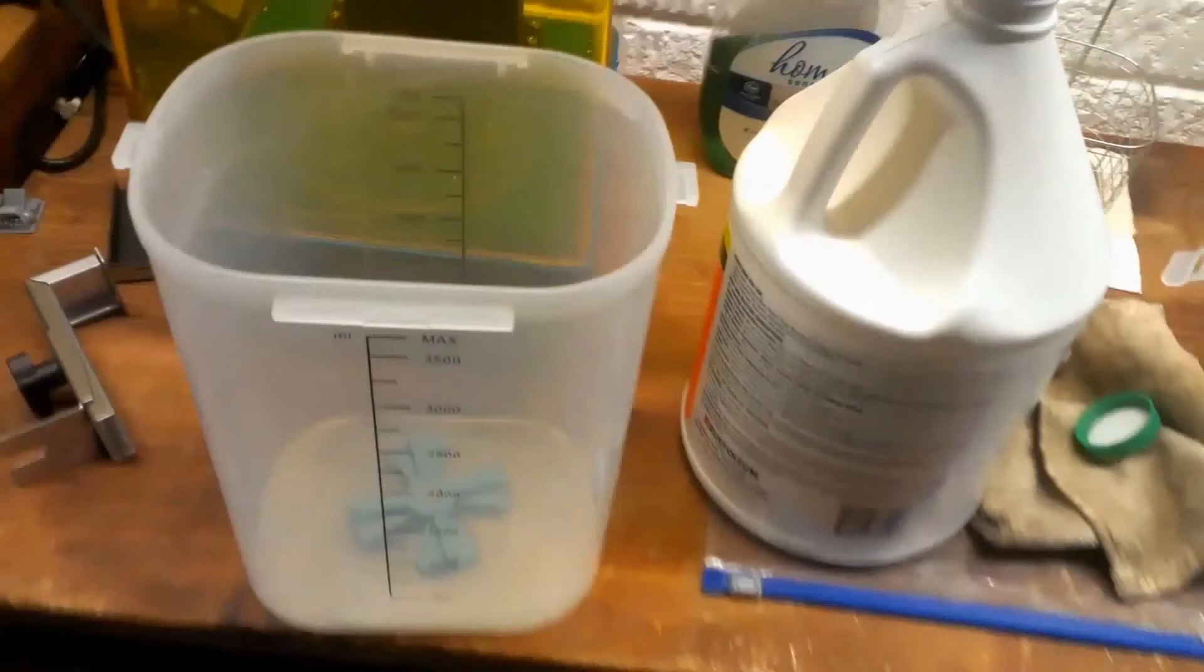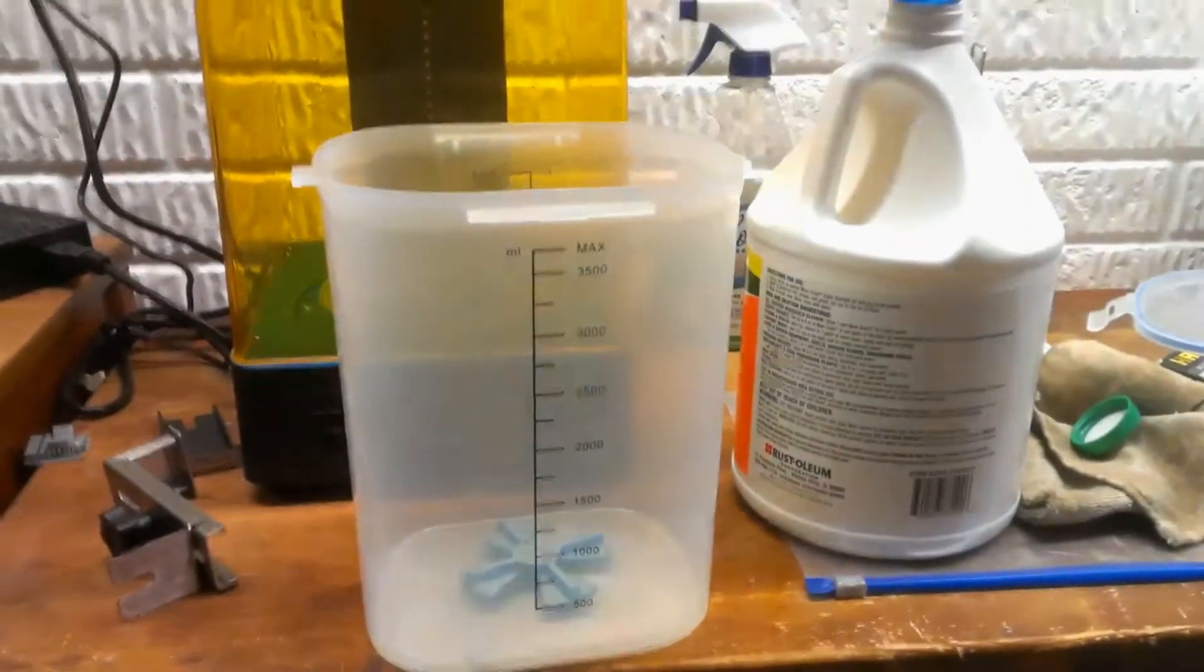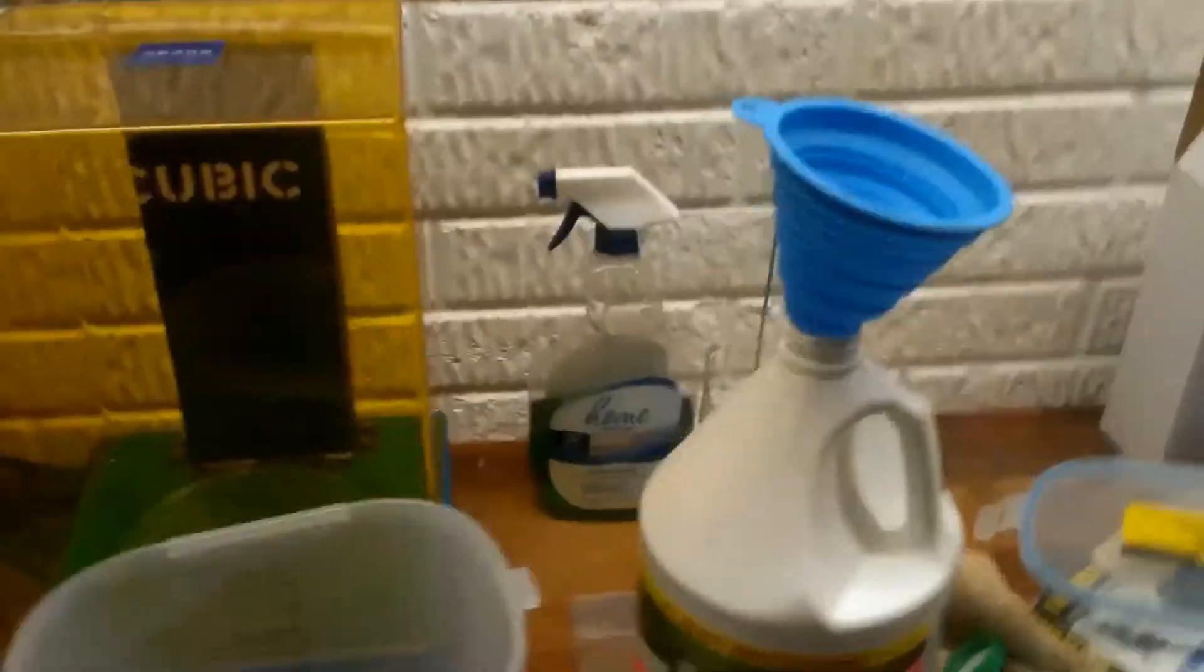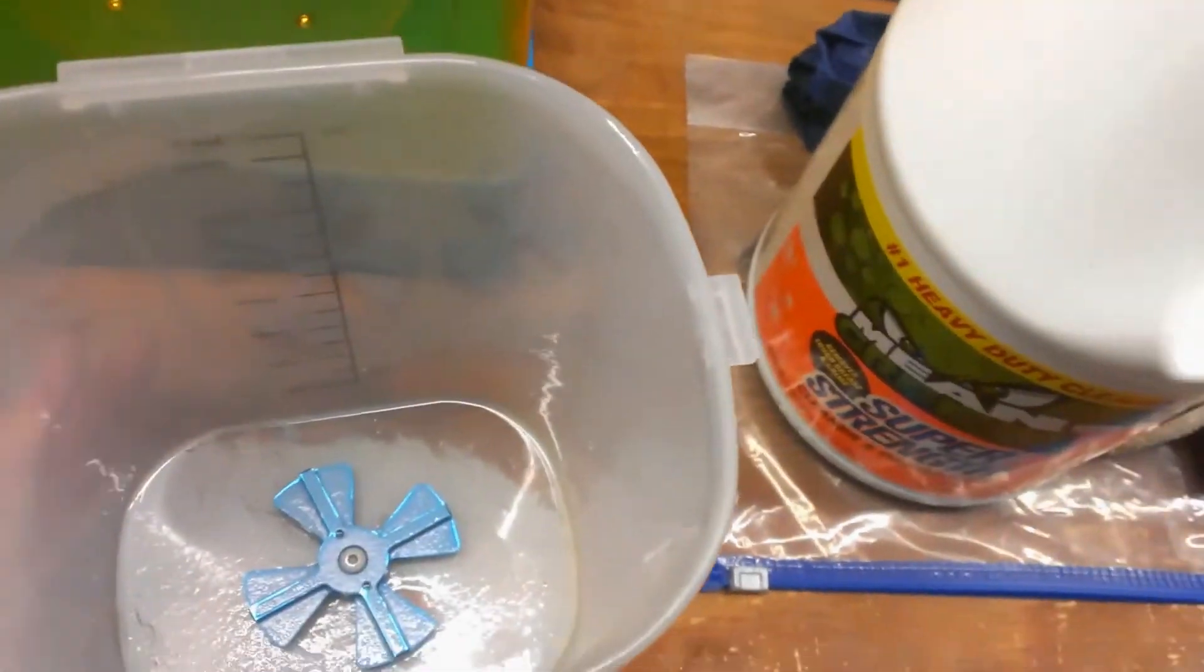I wanted to give you a six-month update on using my Anycubic wash and cure station with super strength Mean Green. The last couple of prints I ran through came out with some residue on them, so today I decided to clean the tank for the first time in six months.